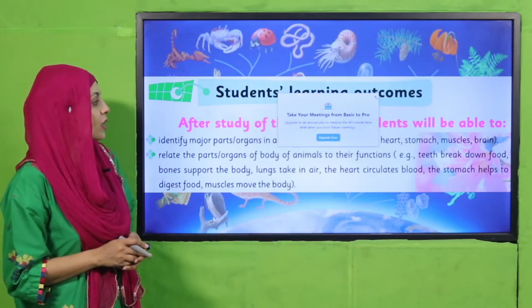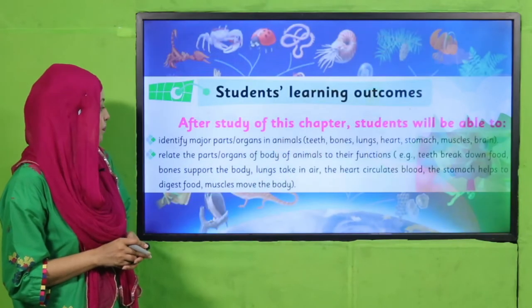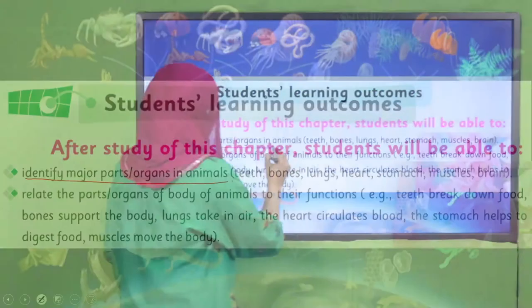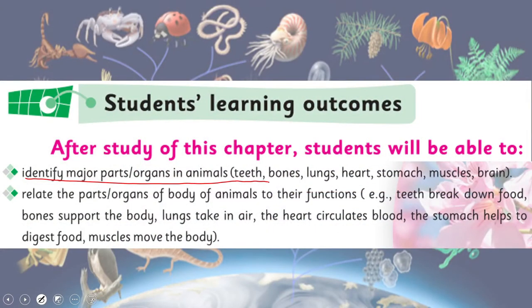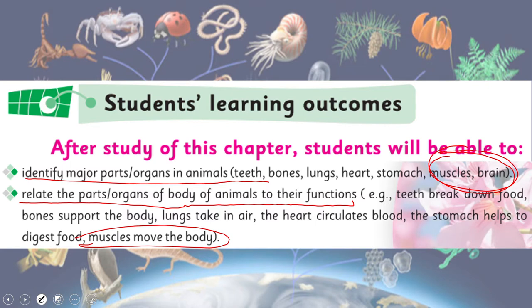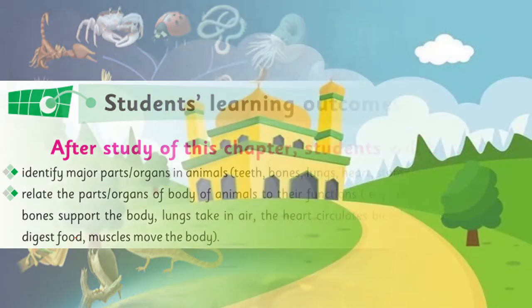Today's student learning outcomes: students will be able to identify the major parts of organs in animals, specifically muscles and brains. They will also be able to relate the organs of animals to their functions — for example, muscles move the body and the brain is the controlling part of the body.